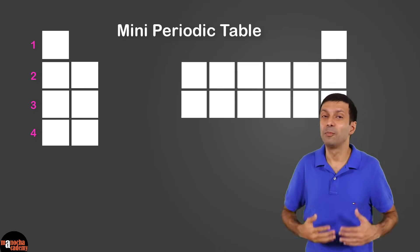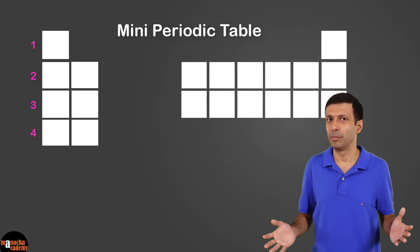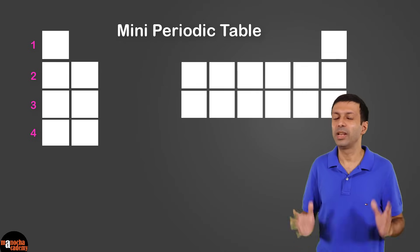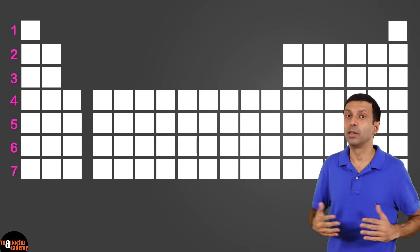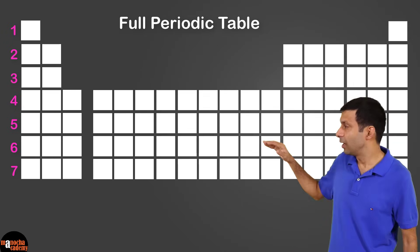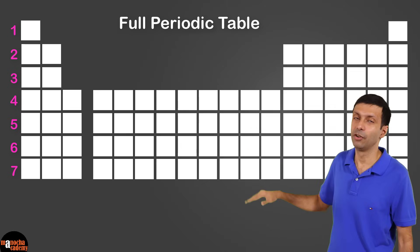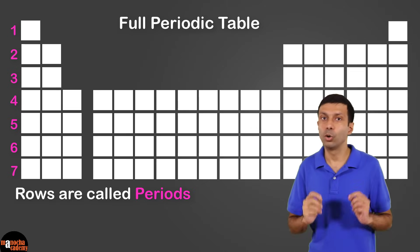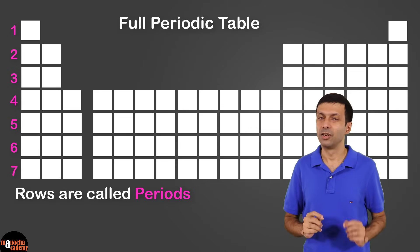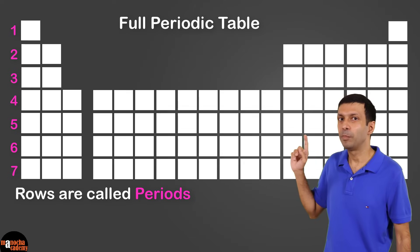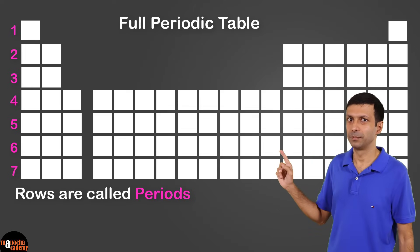In our mini periodic table, we have only 4 rows. But the full table has 7 rows. Rows are called periods, so these are period numbers.